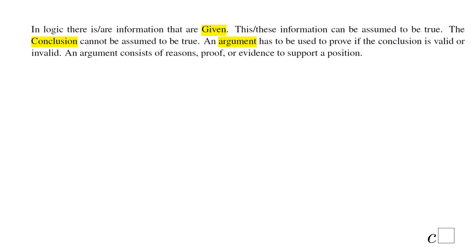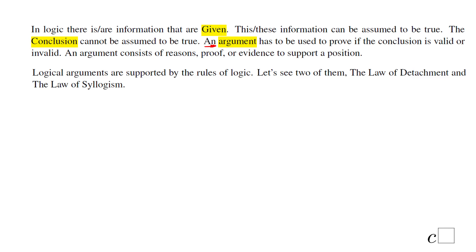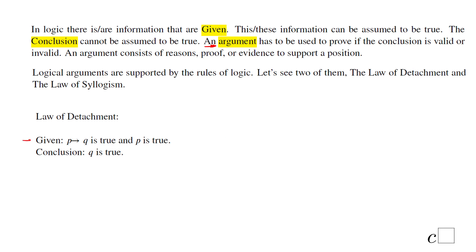In logic, given information is true — you don't have to prove it. The conclusion you want to prove must be supported by steps called an argument. Two important laws used in geometry are the Law of Detachment: if 'if P then Q' is true and P is true, then Q is true. And the Law of Syllogism: if 'if P then Q' is true and 'if Q then R' is true, then 'if P then R' is true — like a transitive property.